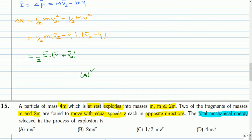This is the next question. A particle of mass 4m, which is at rest, explodes into masses m, m, and 2m. Two of the fragments of masses m and 2m are found to move with equal speeds V each in opposite directions. The total mechanical energy released in the process of explosion is? You can pause and attempt this question.